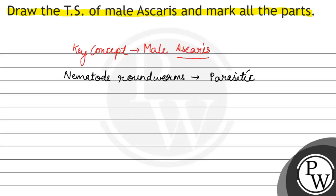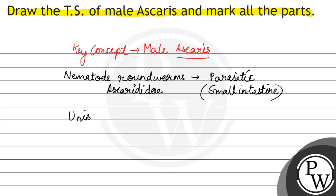Ascaris belong करते हैं to the family Ascarididae. And ये हमारे present होते हैं in the small intestine in human body. Ascaris are unisexual in nature, that means male and female separately present होते हैं.